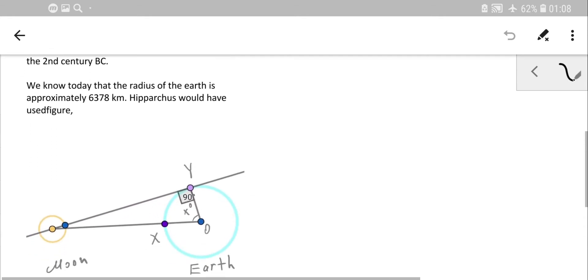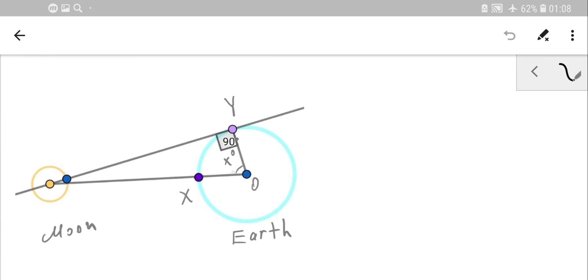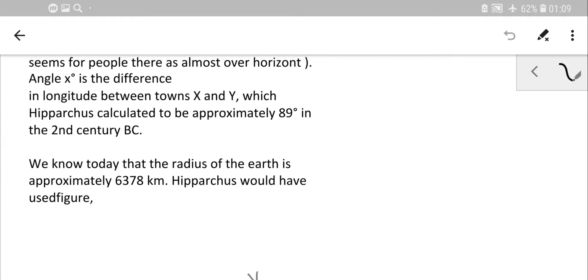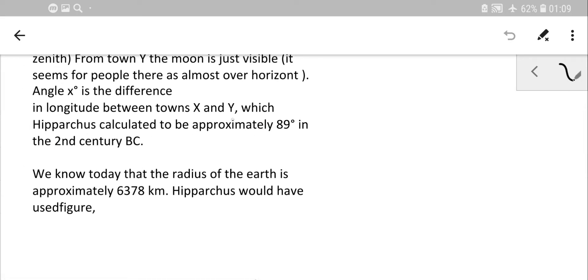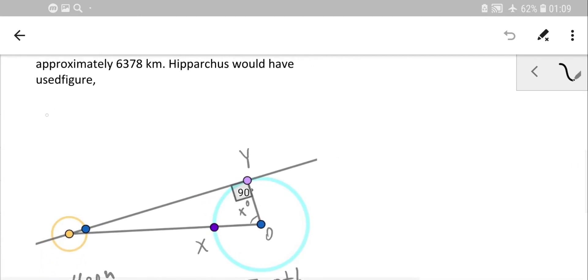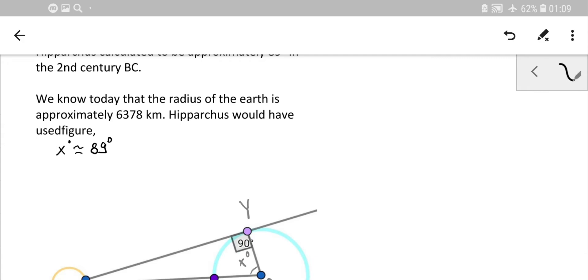The angle x can be measured using the longitude between towns X and Y. Hipparchus calculated this to be approximately 89 degrees, so angle x is around 89°. We also know the radius of the Earth is about 6378 kilometers.